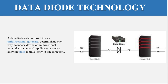So, data diode technology — a diode is a component represented by a specific symbol. The data diode, also called a unidirectional gateway, is a network appliance or device that allows data to travel only in one direction.